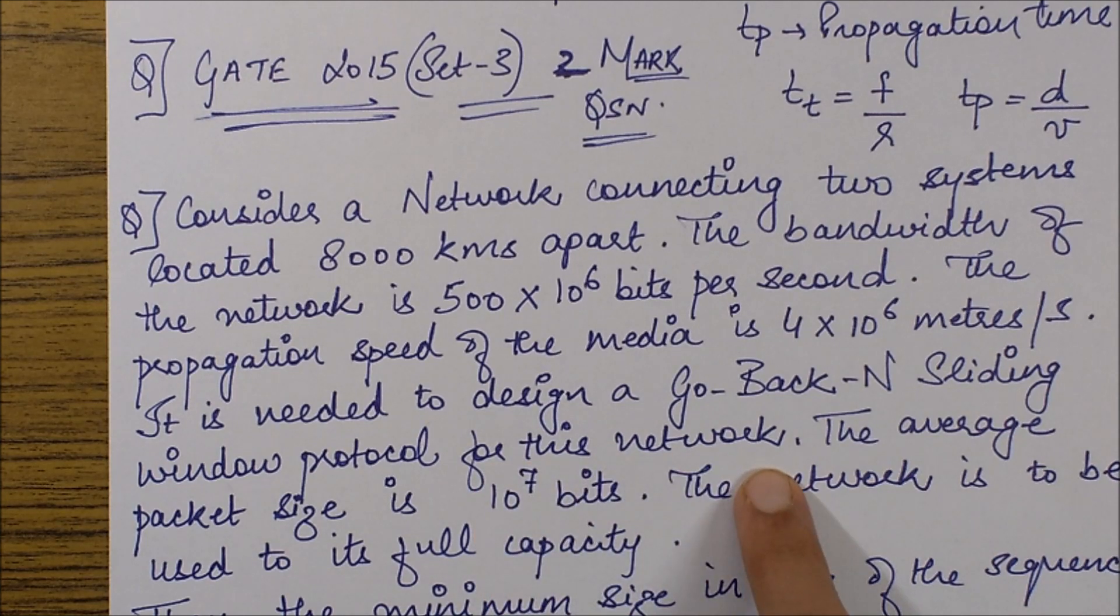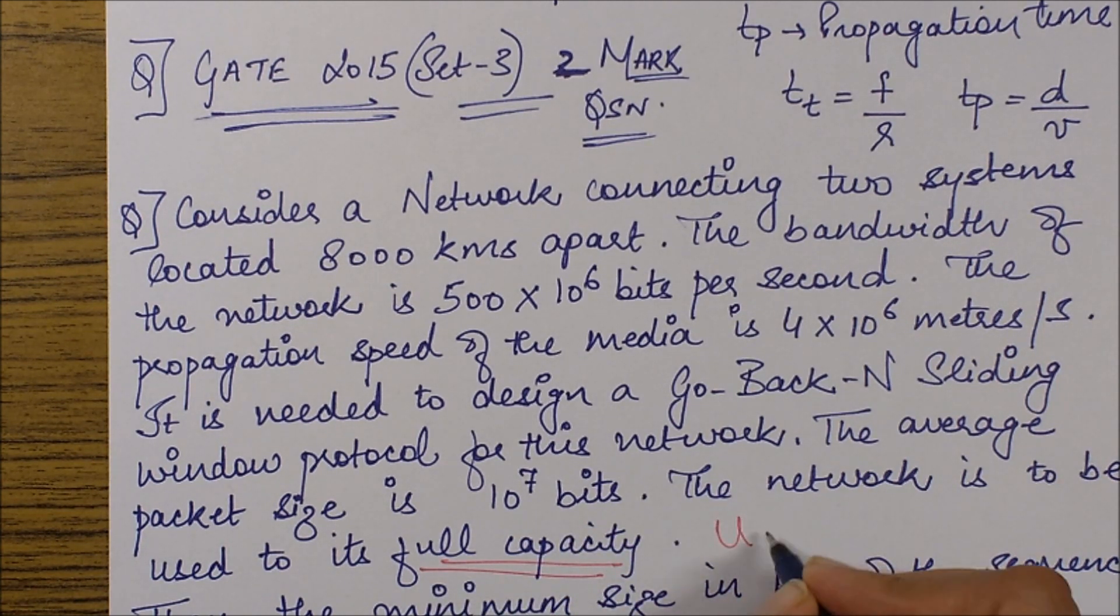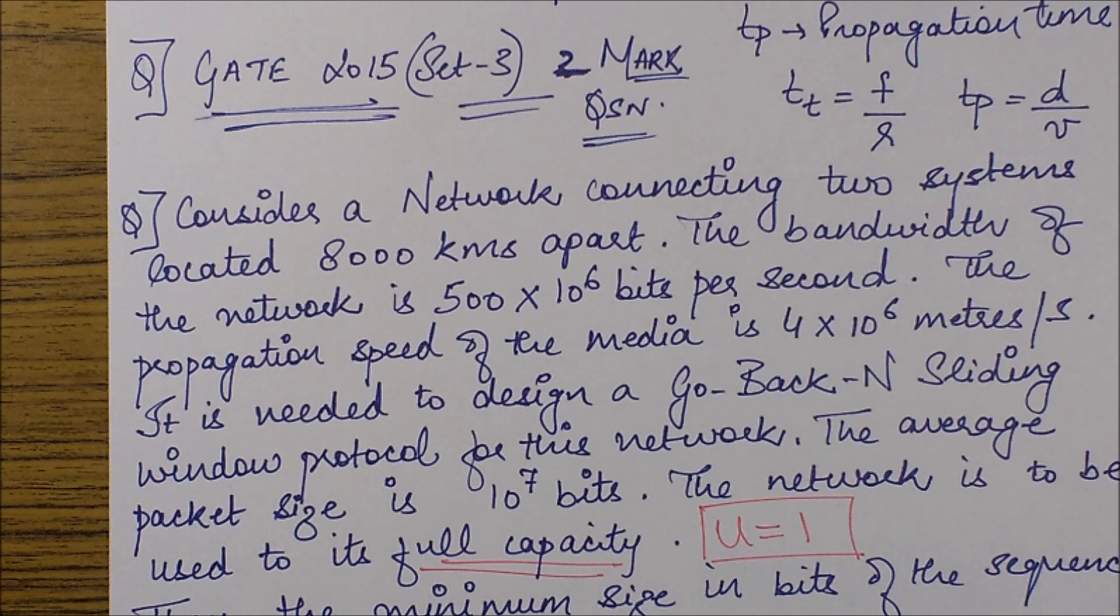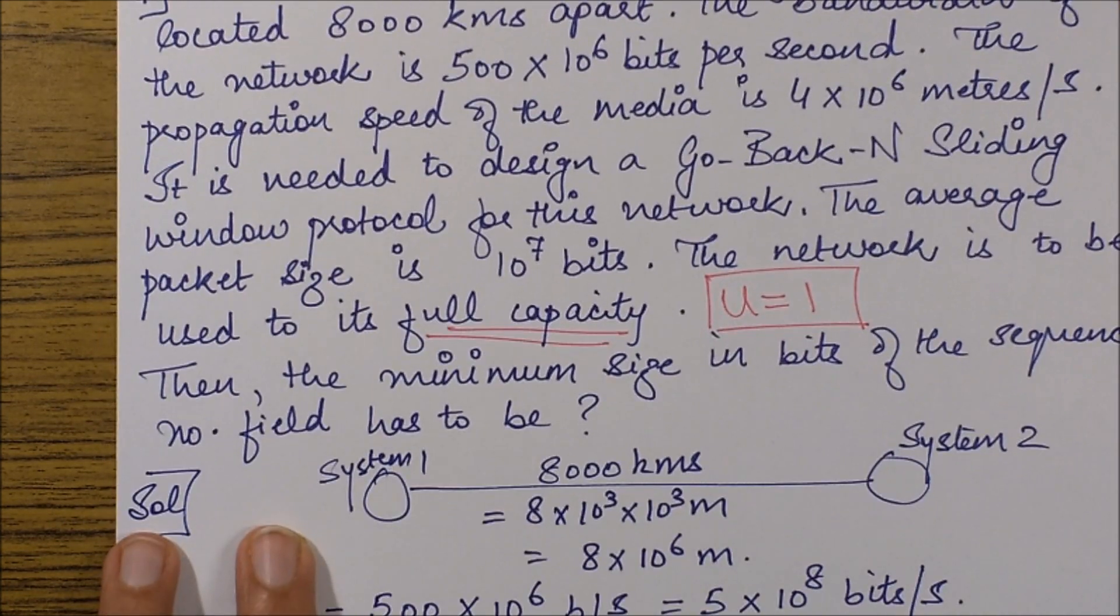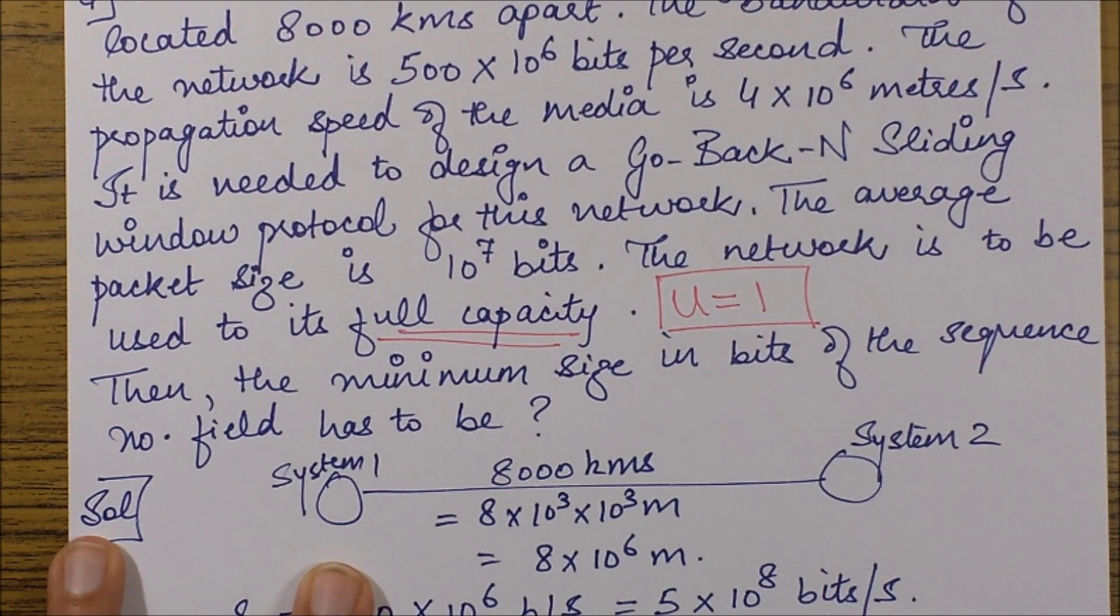Next, it says that it is needed to design a Go-Back-N sliding window protocol for this network. The average packet size is 10^7 bits, and the network is to be used to its full capacity. What does 'to its full capacity' mean? It indirectly gives us that U equals 1, or 100%, so the channel utilization is 100%. Then, the minimum size in bits of the sequence number field has to be what?